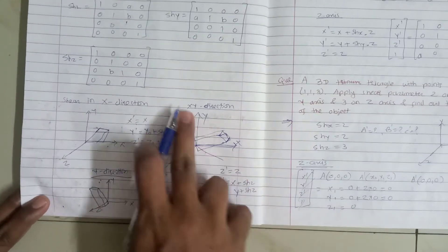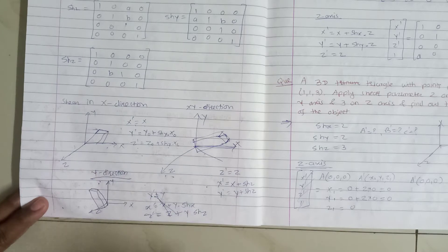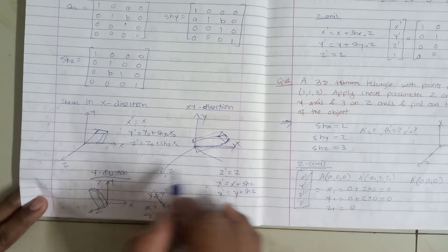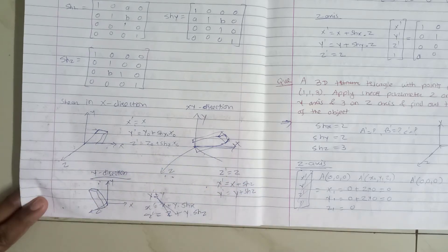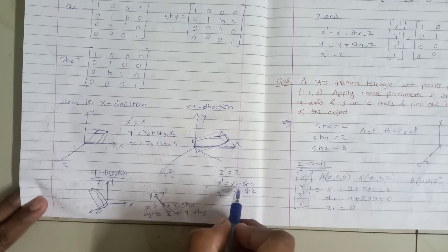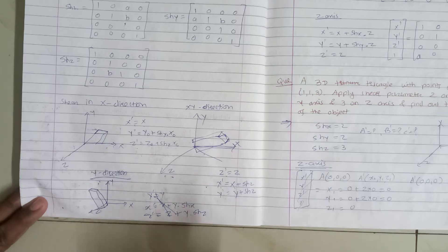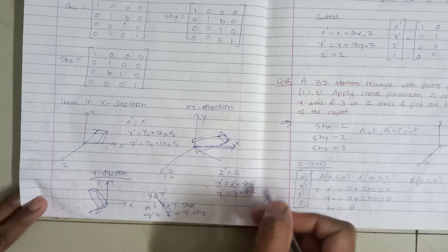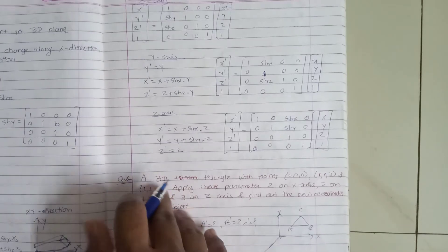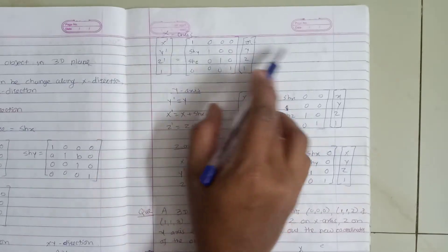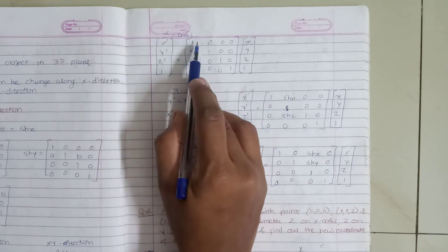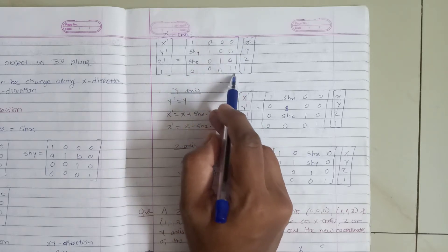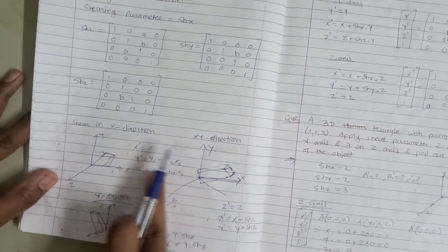For the xy plane, if we change in z direction, the object size changes accordingly. The z parameter remains the same, and x and y undergo changes. After changes in x-axis, the matrix representation becomes: [x' y' z' 1] = [1, shy, shz, 0; 0, 1, 0, 0; 0, 0, 1, 0; 0, 0, 0, 1] multiplied by [x, y, z, 1]. If we multiply this out, we get the corresponding equations.